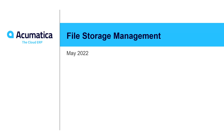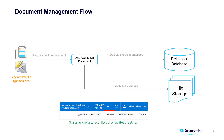Acumatica File Storage. Acumatica Document Management allows you to attach files directly to any business transaction. By default, these files are stored in the database, but they can also be stored in Amazon S3 storage.